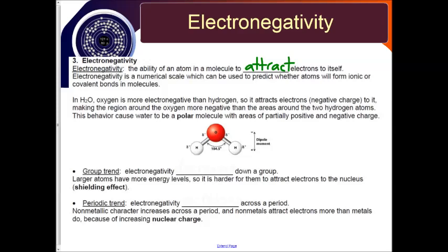Now the group trend for electronegativity: electronegativity decreases going down a group. Larger atoms have more energy levels, so it's harder for them to attract electrons to the nucleus. That's the shielding effect again.